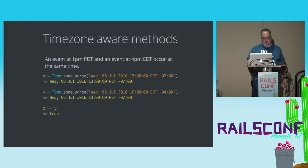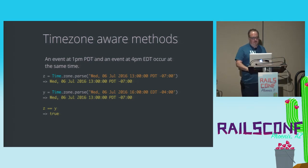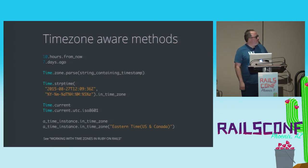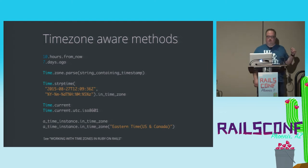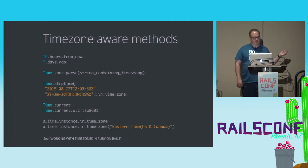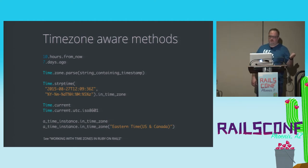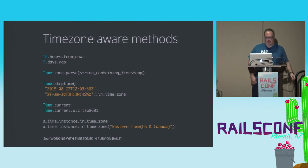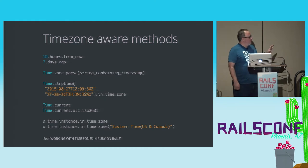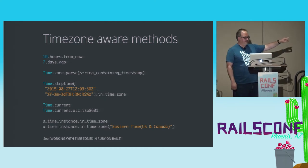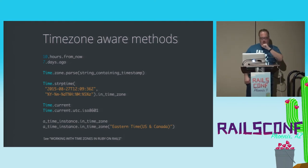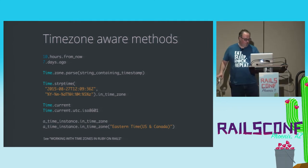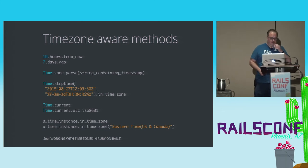These time zone aware methods let you parse two different times in different time zones that are actually the same time — it all works. Here are some methods you should use: hours from now, days ago — those are good. Always do Time.zone.parse, don't do Time.parse. If you use string parse time, always use in_time_zone at the end or you will be screwed. Prefer Time.current to other methods for getting the current time. The UTC ISO 8601 format is for when you're providing something to an API. These examples are stolen shamelessly from a blog post noted at the bottom.